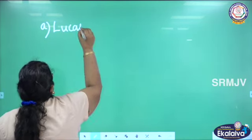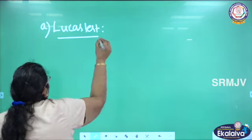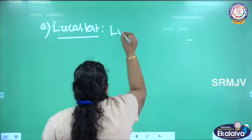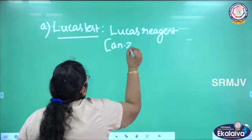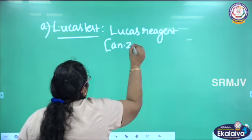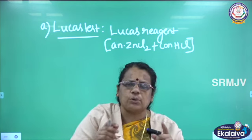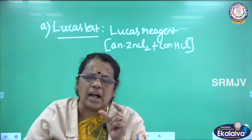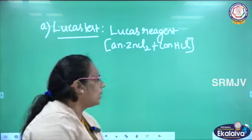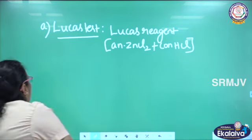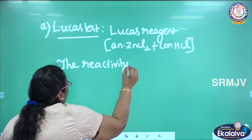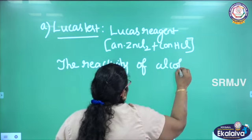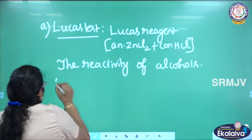The first property we are going to see is the Lucas test. We are going to use Lucas reagent. What is Lucas reagent? It is anhydrous zinc chloride plus concentrated HCl. A mixture of anhydrous zinc chloride and concentrated HCl is known as Lucas reagent. We are going to talk about the reactivity of alcohols.